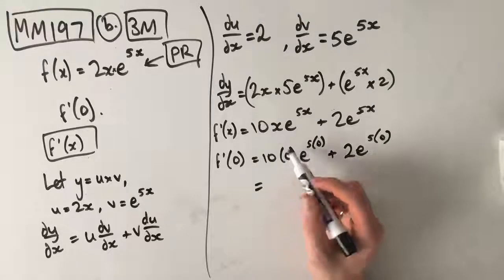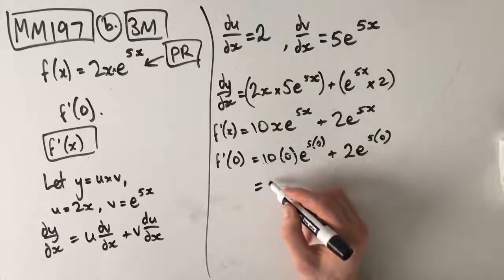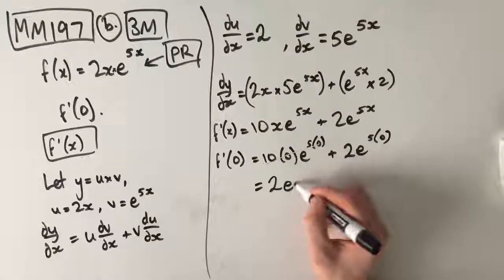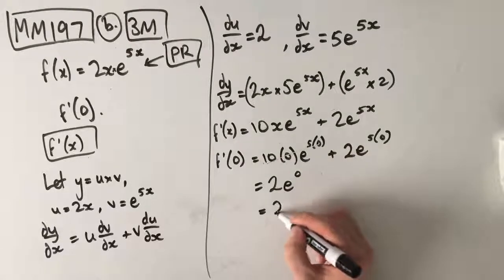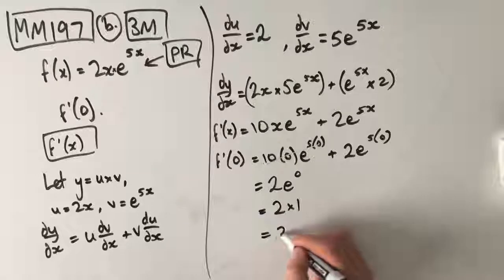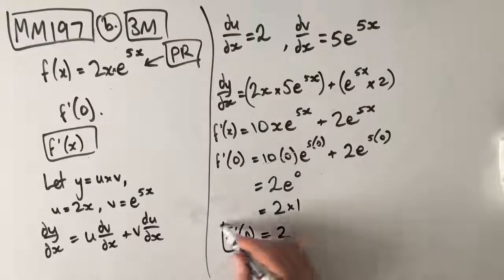Anything times 0 is 0, so all of this is just going to cancel out because we've got a 0 in there and that means that we have 2e to the power of 0. e to the power of 0 is 1 which means f dash of 0 is equal to 2.